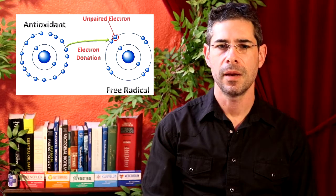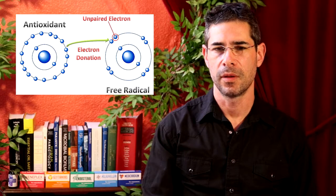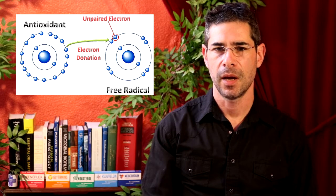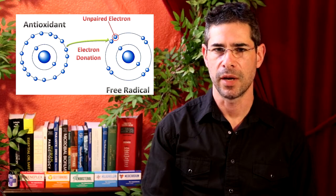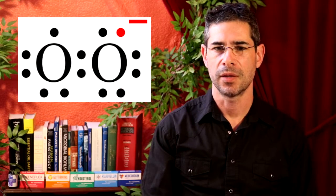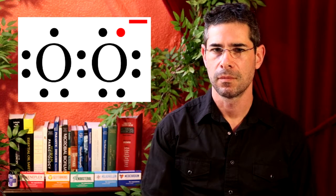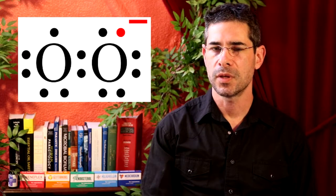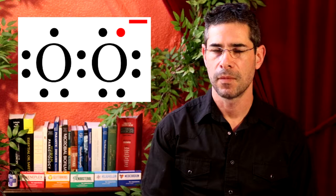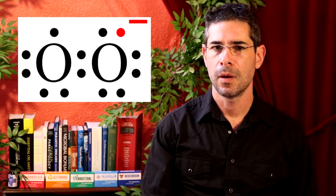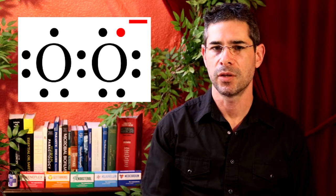There are three main free radicals we have to deal with: superoxide, hydrogen peroxide, and hydroxyl radicals. Let's talk about superoxides first. Superoxides are oxygen molecules with an extra electron, and they're formed in one of four ways: toxic metals can form them, our own immune system can generate them, ultraviolet light can make them, and a misfiring cell as we age can make them.